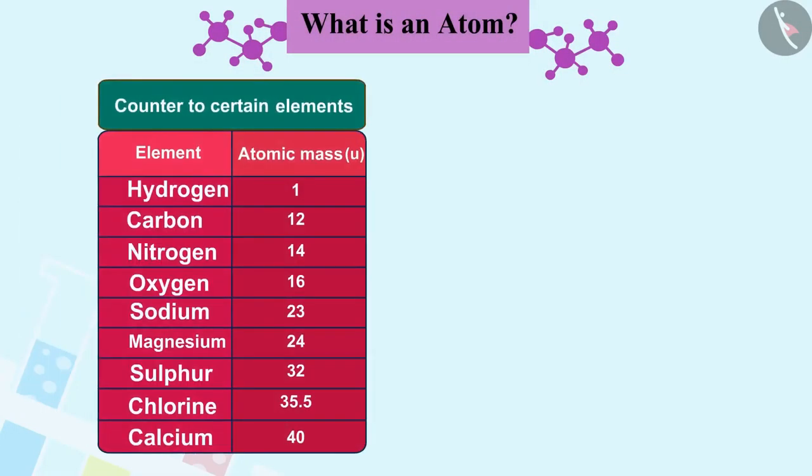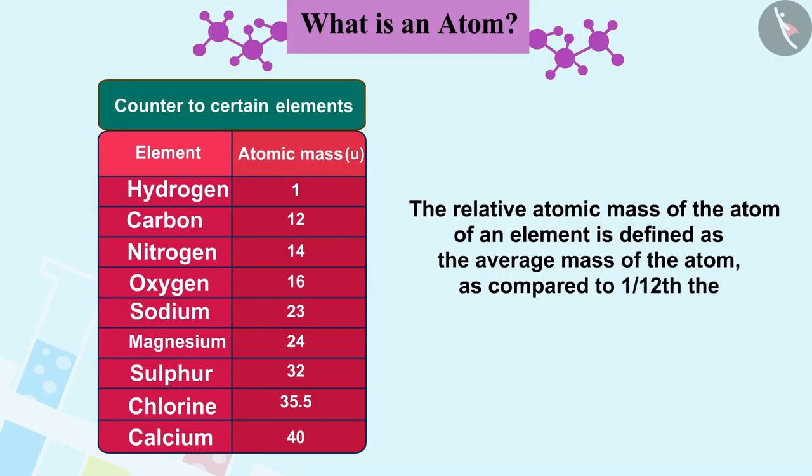Just like in this example, the relative atomic mass of an atom of an element is defined as the average mass of the atom as compared to 1/12th part of the mass of one carbon-12 atom.